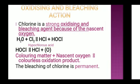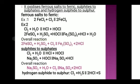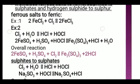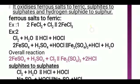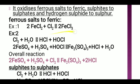We know chlorine oxidizes ferrous salt to ferric. The reaction is: 2FeCl2 plus Cl2 gives 2FeCl3. Ferrous salt (FeCl2) becomes ferric salt (FeCl3).